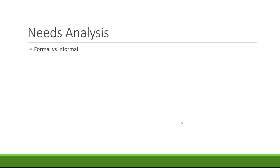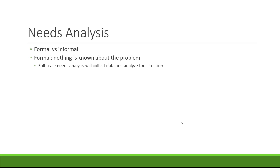There are two kinds of needs analysis: formal versus informal. A formal analysis is done when nothing is known about the problem. In the widget factory example, we know there's a problem but don't know much about it. The supervisors have one opinion; the workers might have another — and you should check in with those workers. In a full-scale formal needs analysis, you collect data, analyze the situation, study the possible change needed, and get different perspectives. You'd decide not only what the change is and what needs to happen, but how you can make it happen.